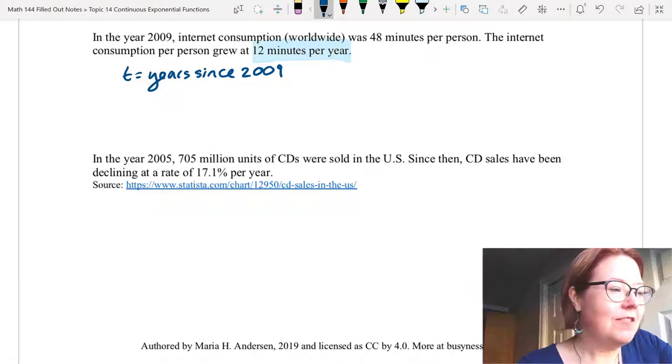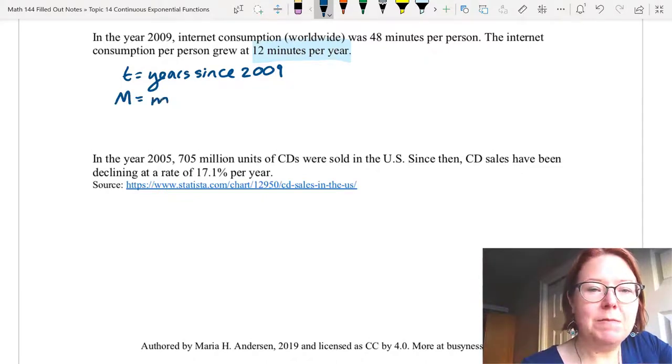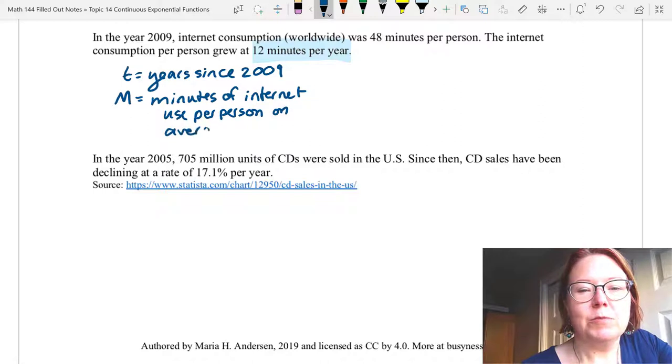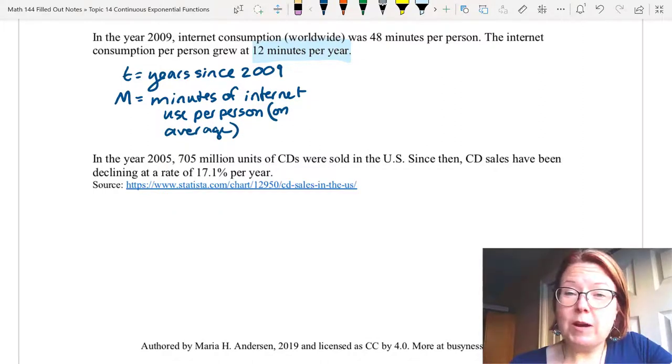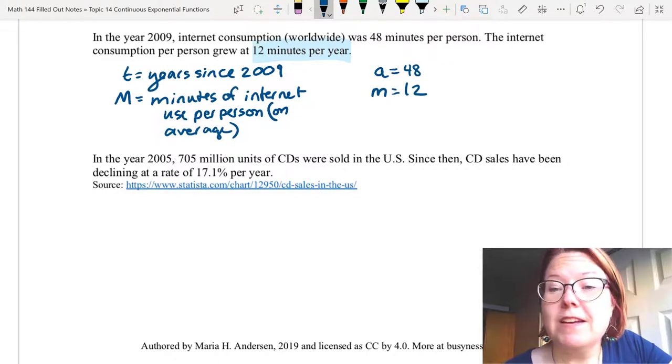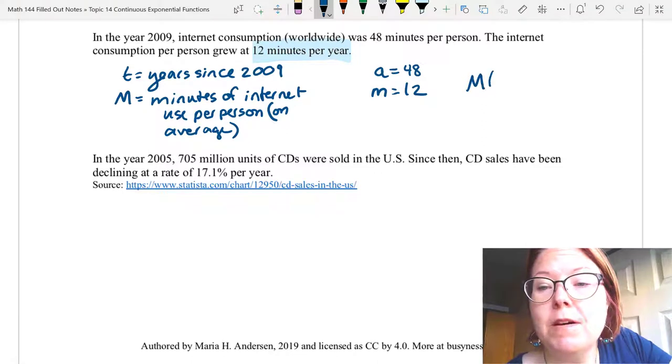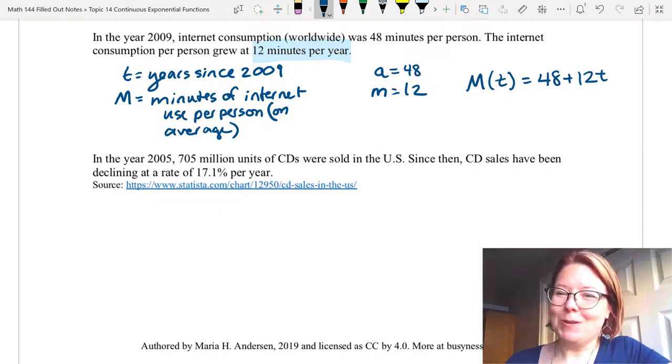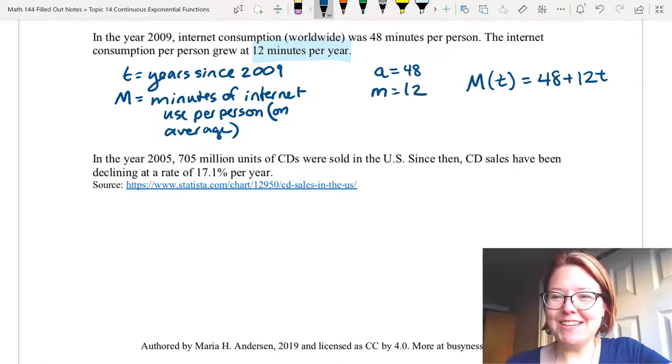Our other variable, I'm going to call this capital M to be minutes, minutes of internet use per person on average. What else do we know about this problem? We know that the initial value a is 48 minutes. And that the slope, lowercase m, is 12. So when we write this, we have M(t) equals 48 plus 12t or 12t plus 48. Just as long as the 12 is the number in front of the t.